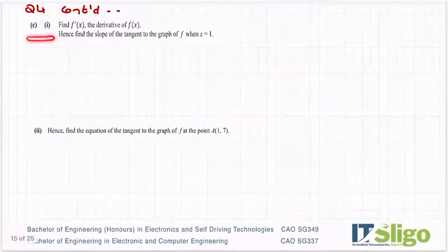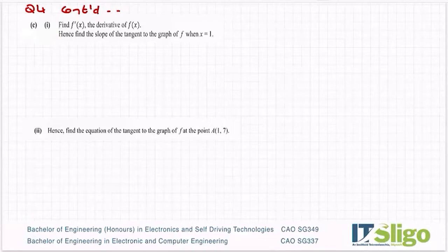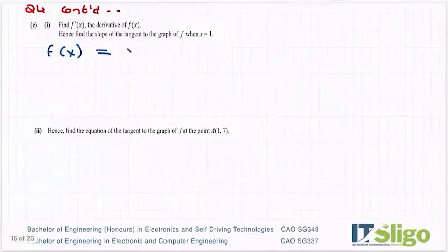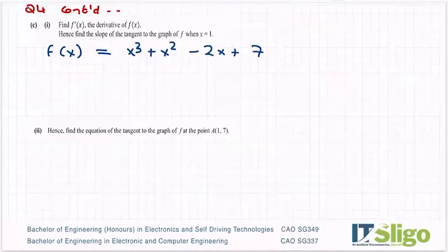Part C, then part 1, find f'(x), the derivative of f(x). So a bit of calculus in this one. So let's take down f(x) again: x³ + x² - 2x + 7. So remember the rule when we differentiate: when we have an x to the power of n, take down the power in front, reduce the power by 1.